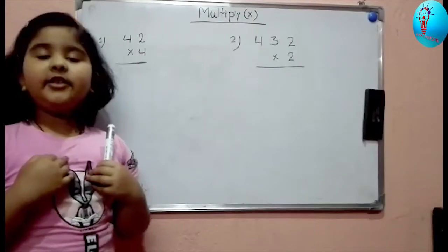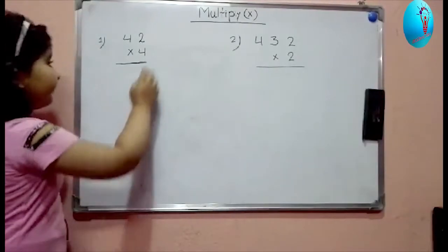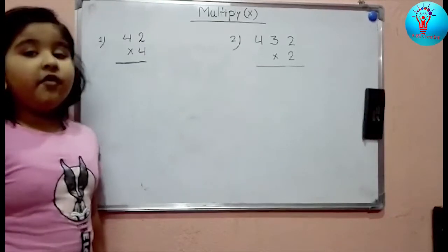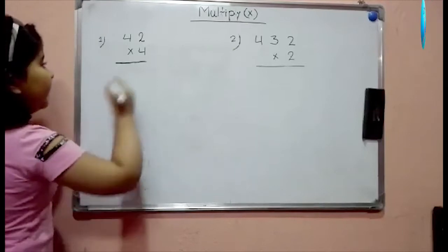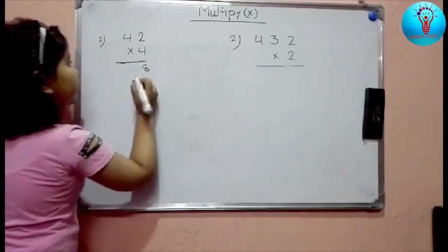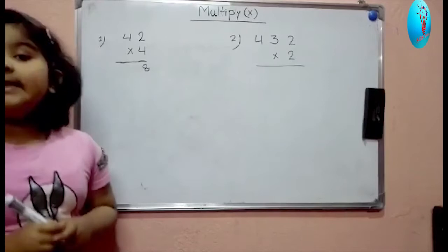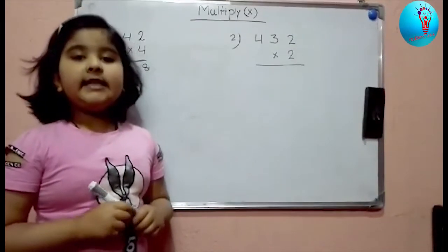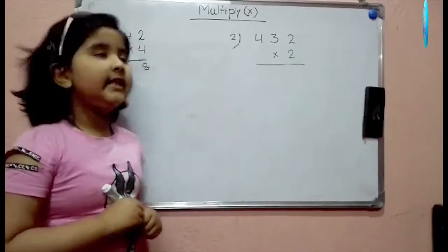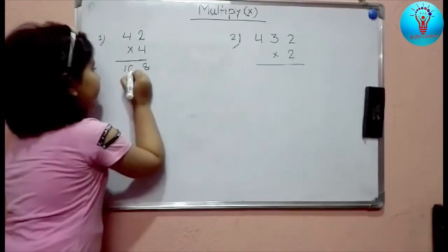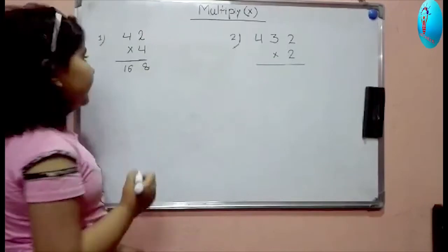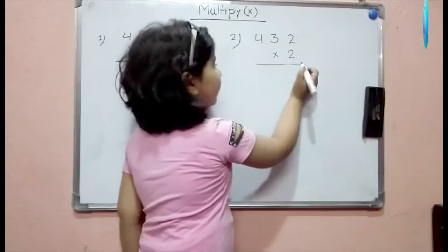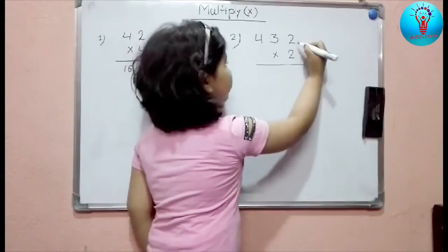Today I'm going to teach you multiply. So 4 times how much? 4 times 1 is 4. 4 times 2 is 8. So the answer is 8. And 4 times how much? 4 times 1 is 4, 4 times 2 is 8, 4 times 3 is 12, 4 times 4 is 16. So the answer is 16. So the total answer is 168.